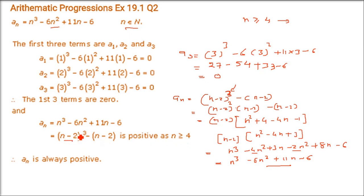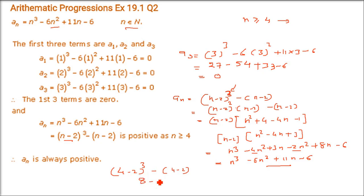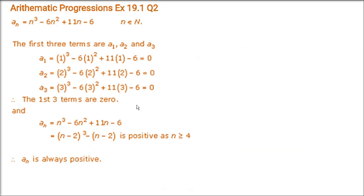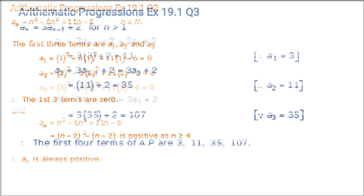Let us verify: put n = 4. (4-2)³ - (4-2) = 8 - 2 = 6, which is positive. Hence the first 3 terms are 0 and after that all terms are positive.